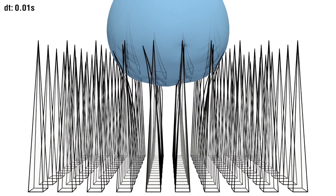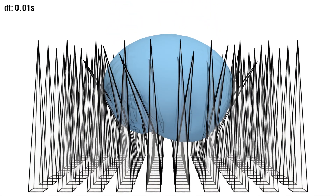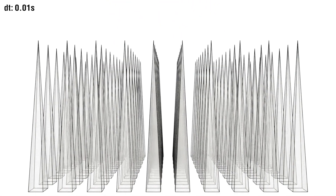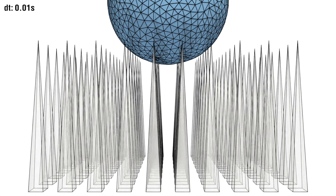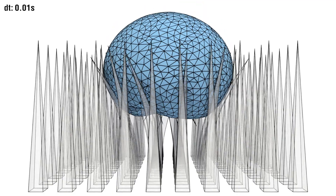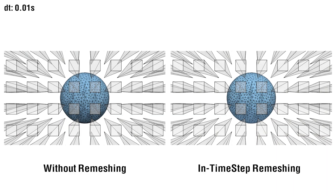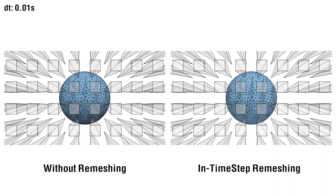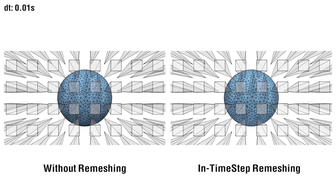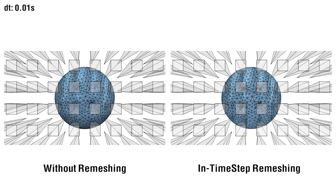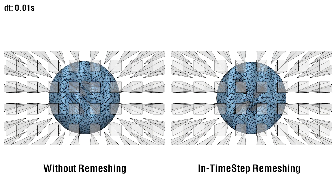Within time step remeshing, the interaction between soft and stiff bodies triggers refinement where needed to capture high resolution compliance at contacts. These details are lost when starting with the same uniform mesh without remeshing.